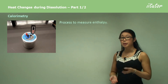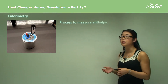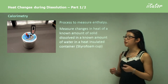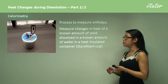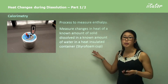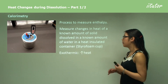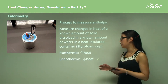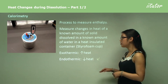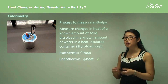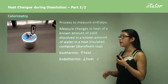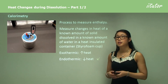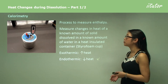Looking back at calorimetry from previous lessons — it's a process to measure enthalpy changes by dissolving known amounts of solid in a known amount of water in a heat-insulated container, usually a styrofoam cup. An exothermic process releases heat, causing a temperature increase, while an endothermic process causes a temperature decrease. When dissolving salts in water, we are both breaking bonds — endothermic — and forming bonds — exothermic — and the overall result is the sum of all these contributions.